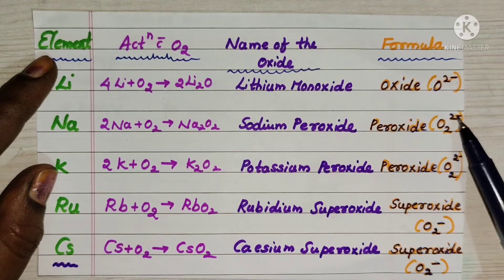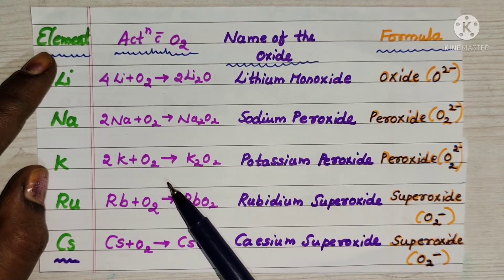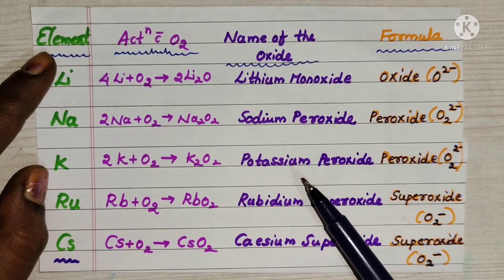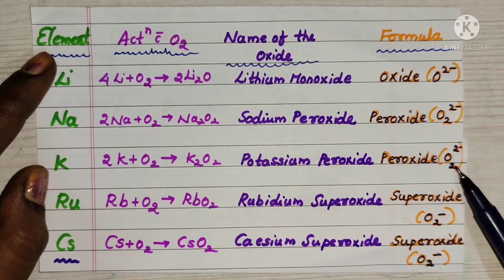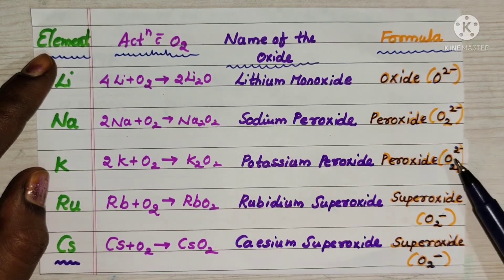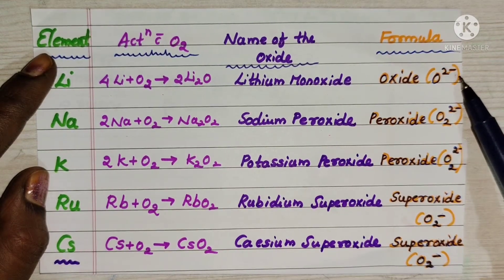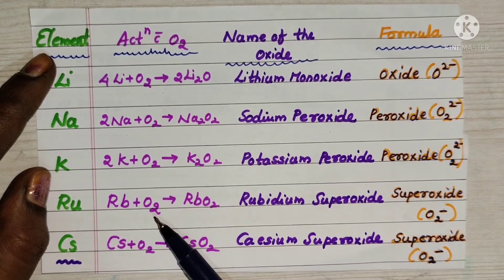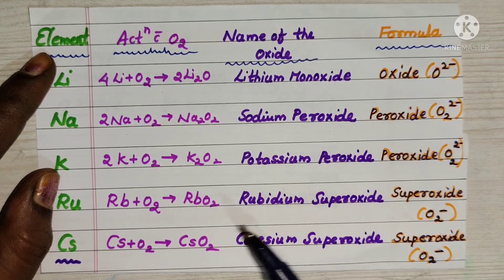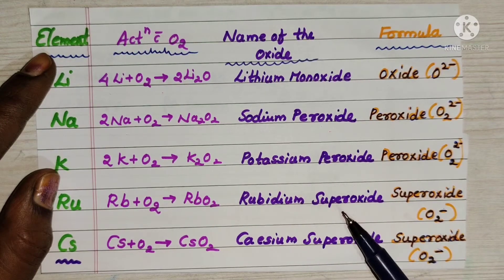When potassium reacts with oxygen, it may give potassium peroxide K2O2. Peroxide formula is O2 power 2 minus. Peroxide O2 power 2 minus. Oxide is O power 2 minus. Oxygen will have minus charge.